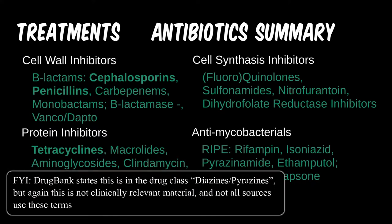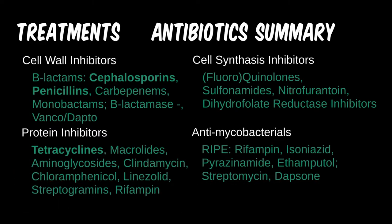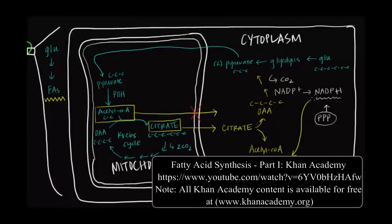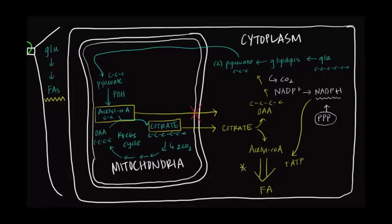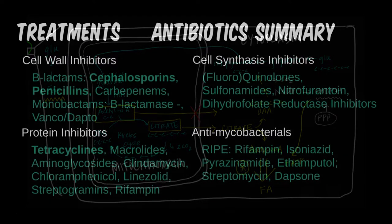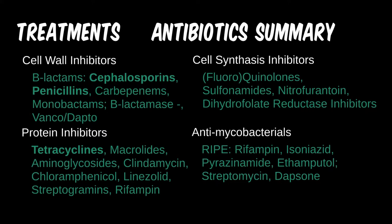Disrupting the pH of any cell can cause dysregulation and, at high enough concentrations, death of the cell. In mycobacteria specifically, the decrease in pH helps stop fatty acid synthesis, which is used in the cell walls of the bug.